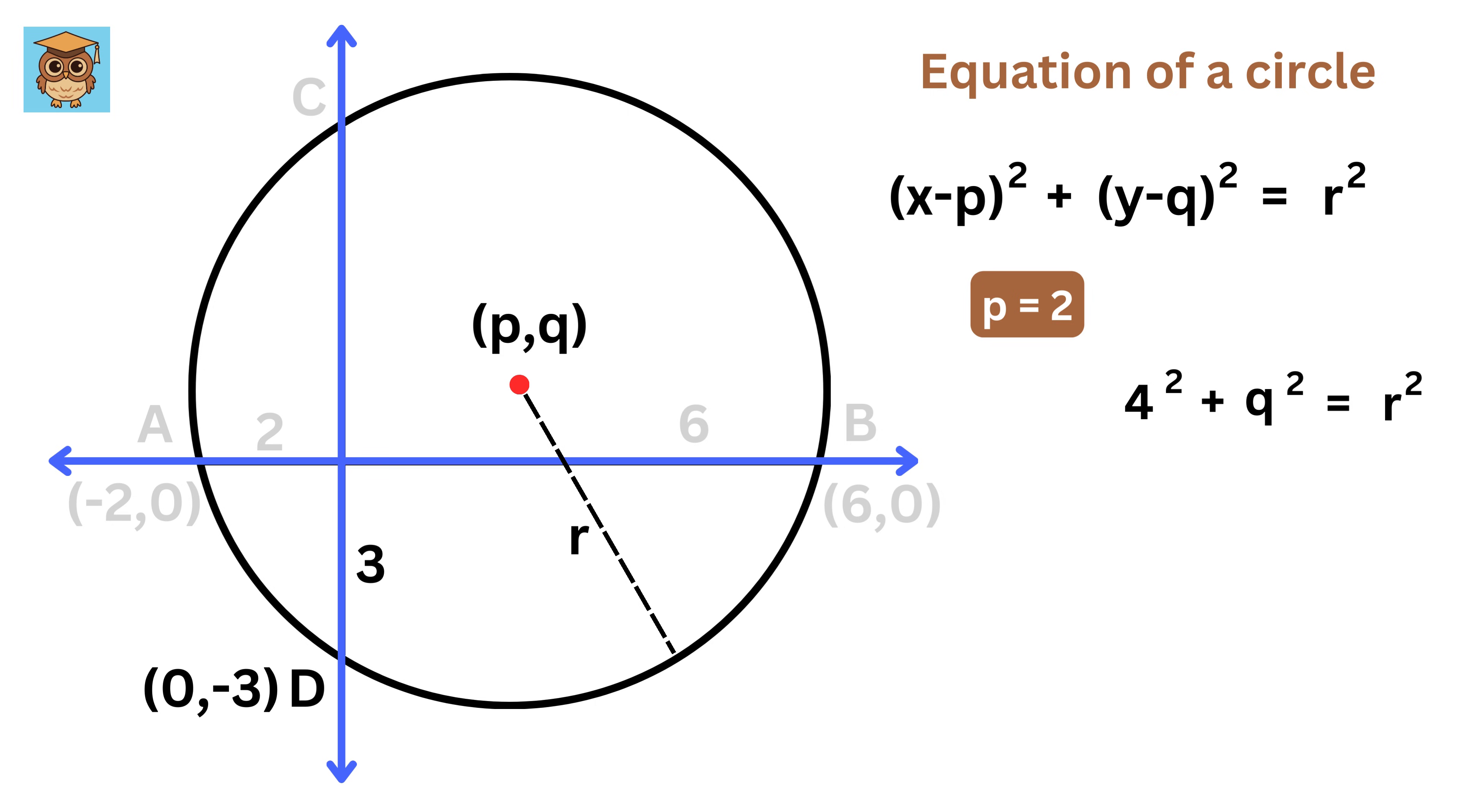Now, using point D and the same formula, we get a third equation. We simplify this equation by knowing that p equals 2, and after subtracting again, we find that q equals 0.5.